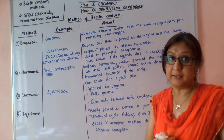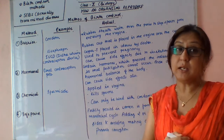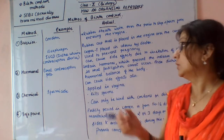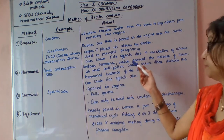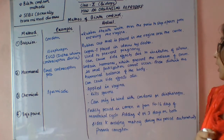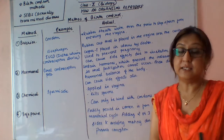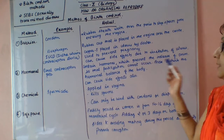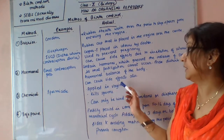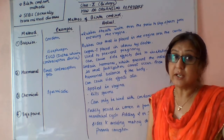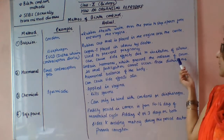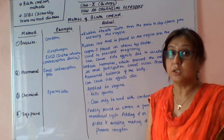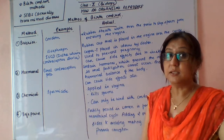Next is the hormonal method, given by prescribing oral contraceptive pills. These contain hormones which prevent the release of the ovum. If the ovum is not released, fertilization will not take place. However, these disturb the hormonal balance of the body and will definitely cause side effects, because you are inhibiting the release of ovum — it will cause adverse effects to the body.